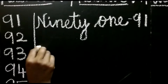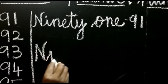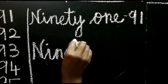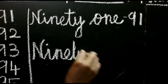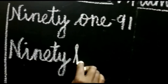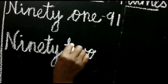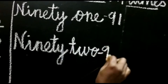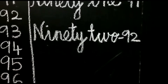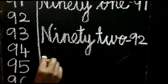Now 92 spelling — same spelling for 90: N-I-N-E-T-Y. What is the spelling for 2? T-W-O. So 92. The next number is 93.